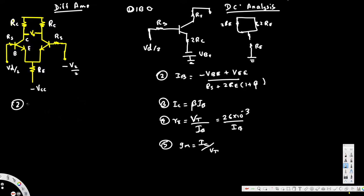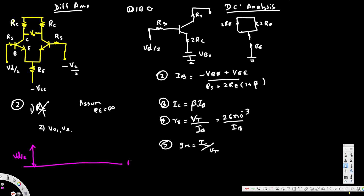For the differential gain, we assume Re is equal to infinity, so we can neglect Re. With Re not present, let's see how to calculate Vo1 and Vo2. We are going to draw the equivalent five-model of this circuit. In the five-model, the input voltage is Vd/2.